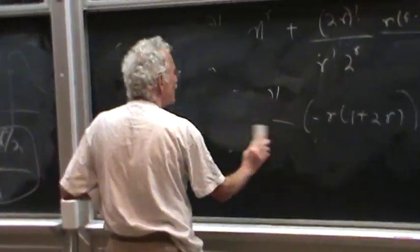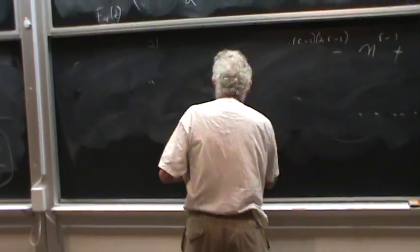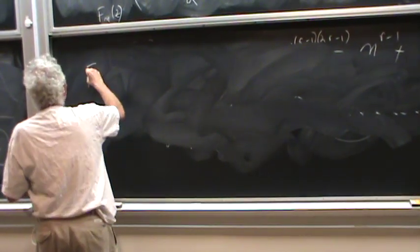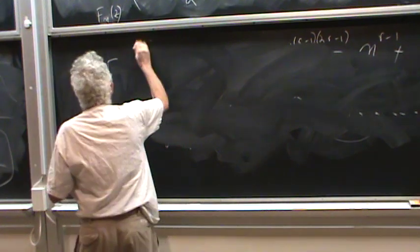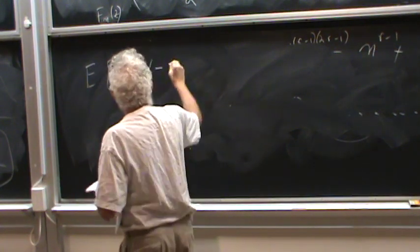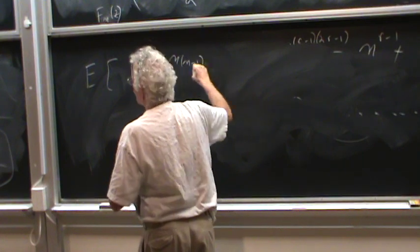So I'm reminding you, the correlation between two random variables is the expectation of the product. So in this case, we have inf, and we know the average. So we take the average of this.